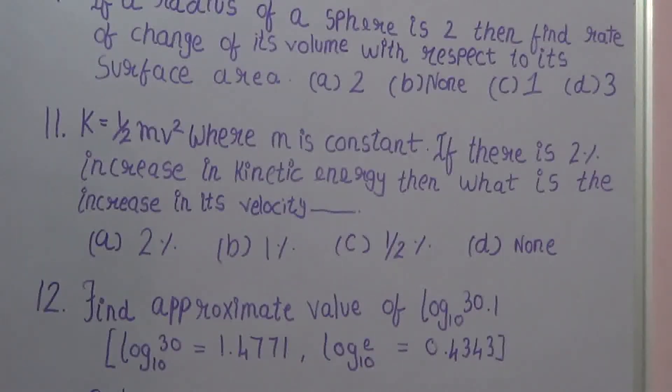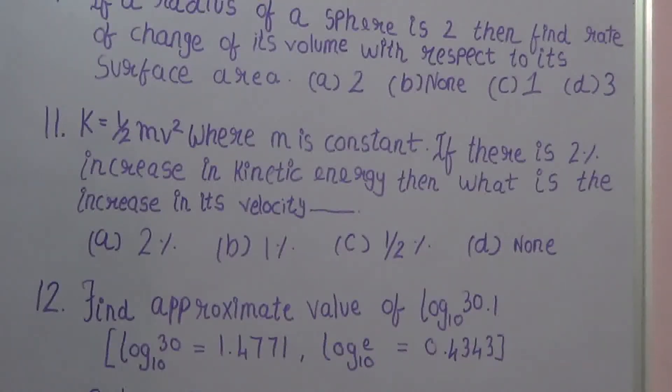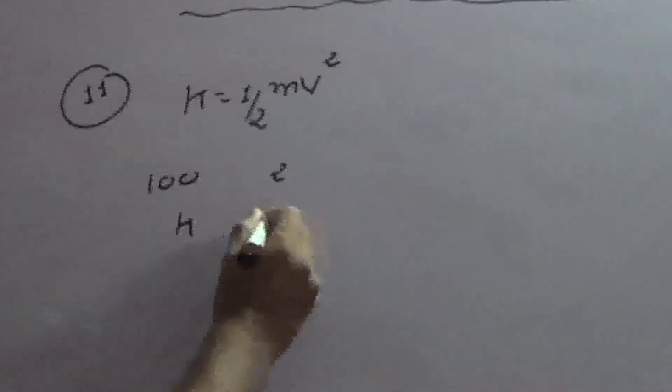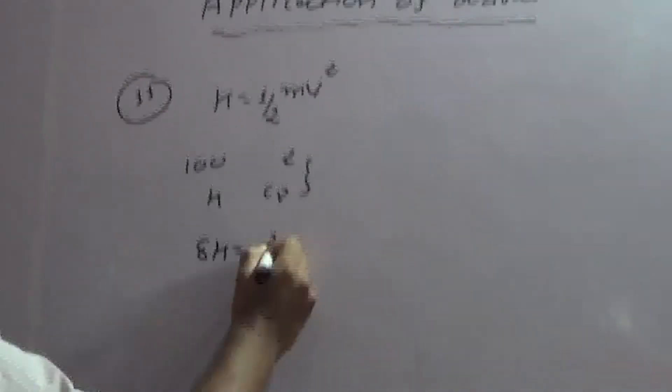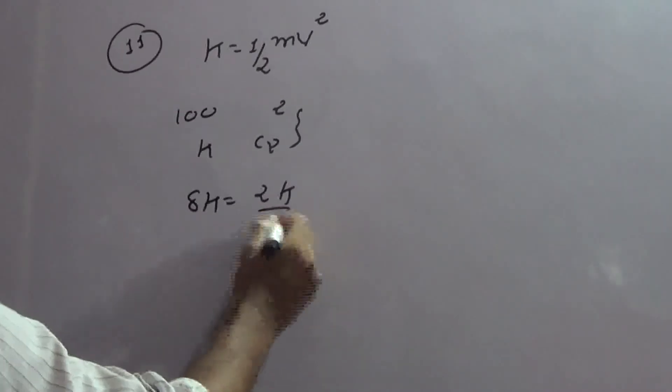Velocity mein kitna increase hoga? Right? 2% increase in kinetic energy. Matlab, I can say 100 to 2. K stands for the kinetic energy. So delta K kya ho jayega? 2K by 100.